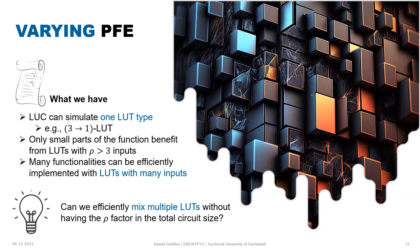So we are looking for a trade-off between privacy and efficiency where we want to mix different lookup tables of different dimensions. By mixing different dimensions of the lookup tables, we leave the dimension of the lookup tables, but we can get rid of this ρ factor. This is what we call varying universal circuits, or VOC.